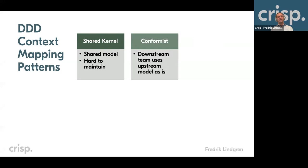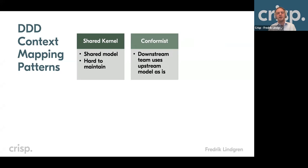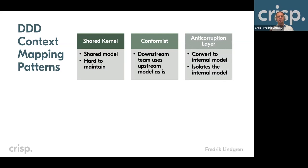Another pattern is about how you as a user of a dependency can approach it. The conformist pattern says the model you depend on is perfectly fine and you can use it as it is. One very good pattern is adding an anti-corruption layer — basically, within our service we have our own cohesive model, and when we talk to our dependency, we convert its model into our model. This isolates the internals of our system from external changes.